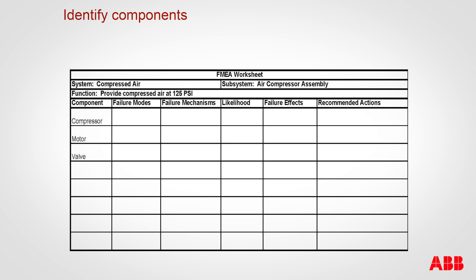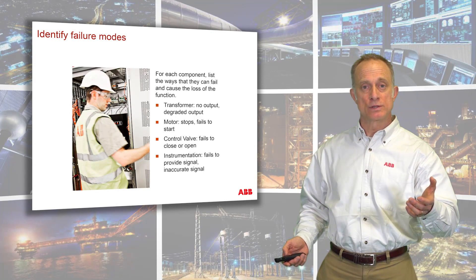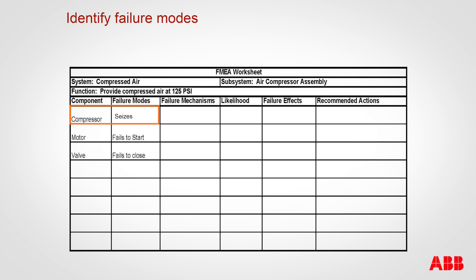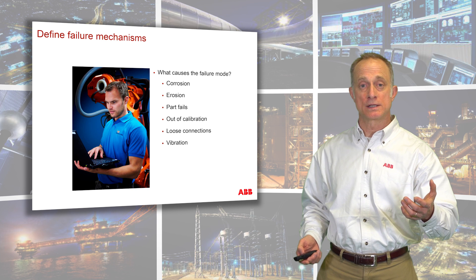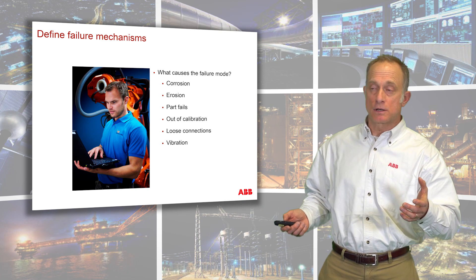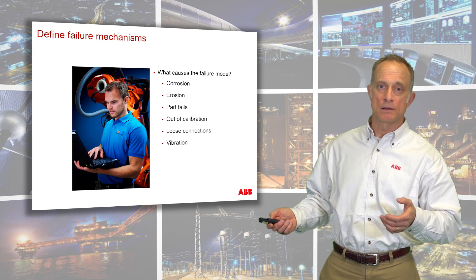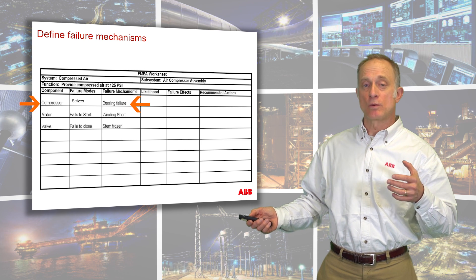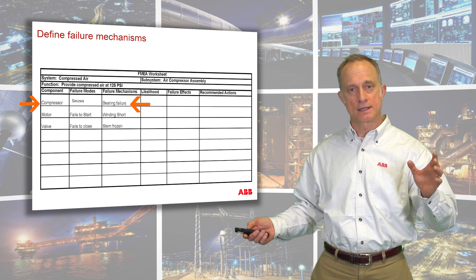In our failure modes and effects analysis worksheet, we'd have the compressed air system looking at the subsystem of air compressor assembly, and the components would be compressor, motor, and valve. We then want to identify the failure modes — what could go wrong with each of those components? For a compressor it might seize; for a motor it might fail to start; a valve might fail to close. Next, we look at the failure mechanisms — what would cause these things to fail? It could be corrosion, erosion, a part failure, or improper calibration. For a compressor, the failure mode is that it seizes, and what would cause that might be a bearing failure. So we go through all of our systems like that and fill out this sheet.